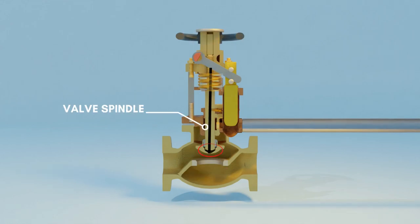The valve disc is attached to one end of the valve spindle, which is also spring-operated. The other end of the spindle is attached to the heart of the quick-closing valve, which is the actuator assembly.